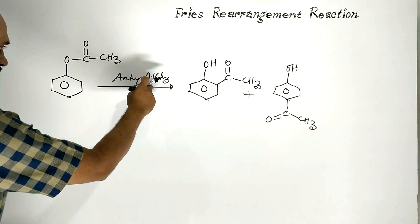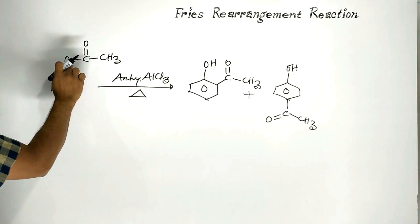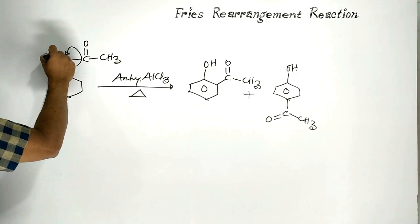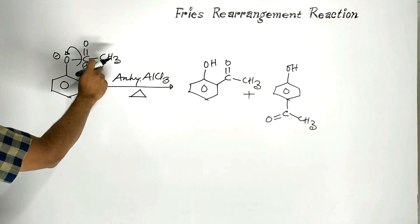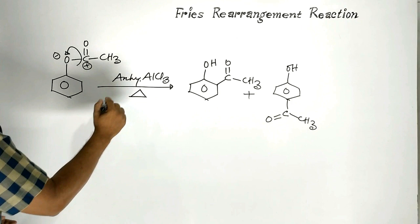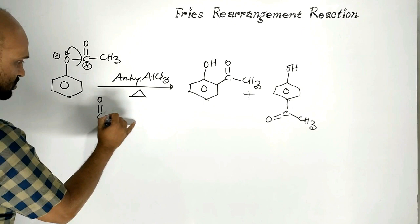In presence of a Lewis acid — strong Lewis acid, anhydrous aluminium chloride — this oxygen-carbon bond undergoes a heterolytic fission. Oxygen becomes negatively charged, carbon becomes positively charged. This portion acts as electrophile. This electrophile is formed with the help of Lewis acid, anhydrous aluminium chloride.